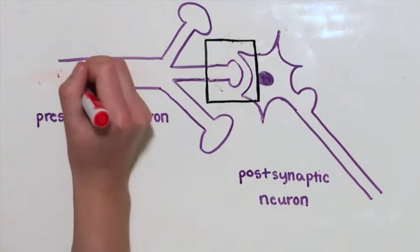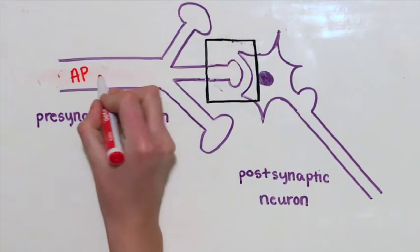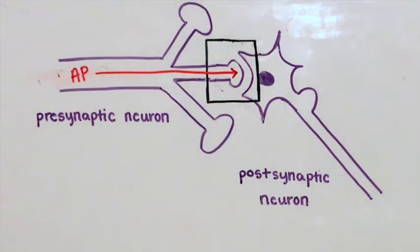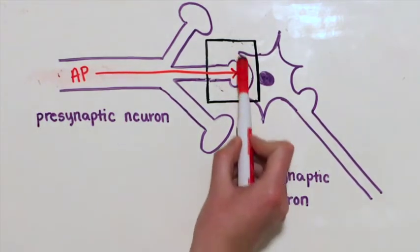When an action potential or electrical stimulus travels down the pre-synaptic neuron and reaches the terminal bouton, glutamate, the most excitatory neurotransmitter, is released into the synaptic gap.